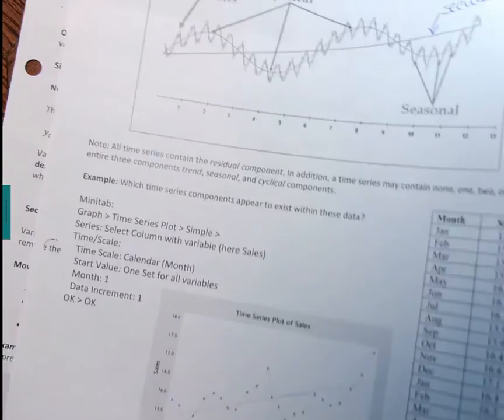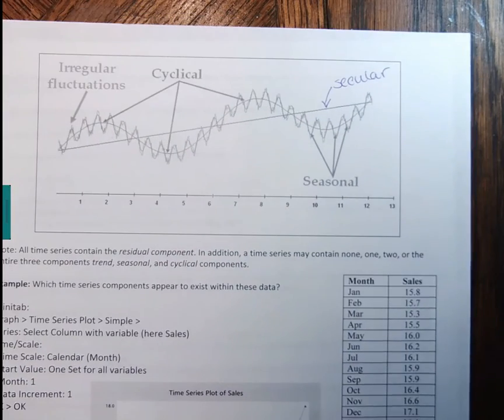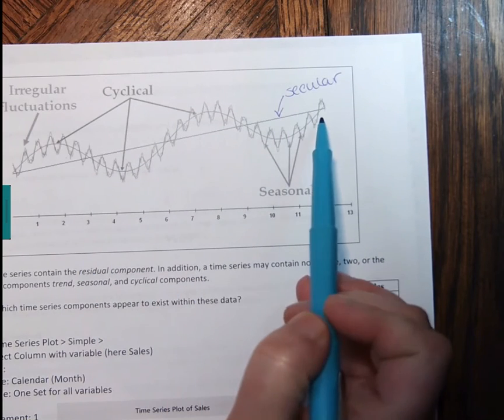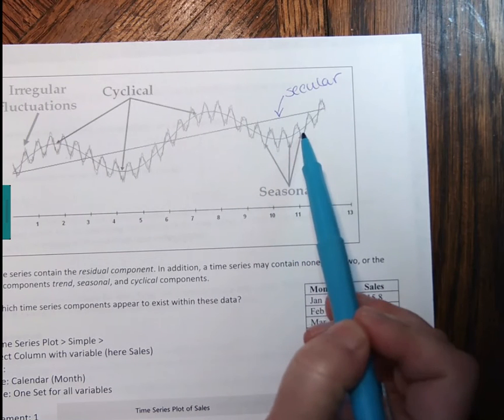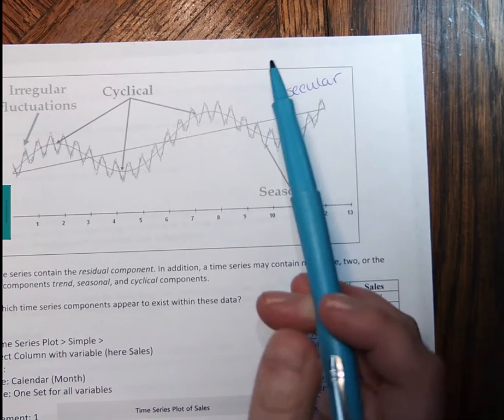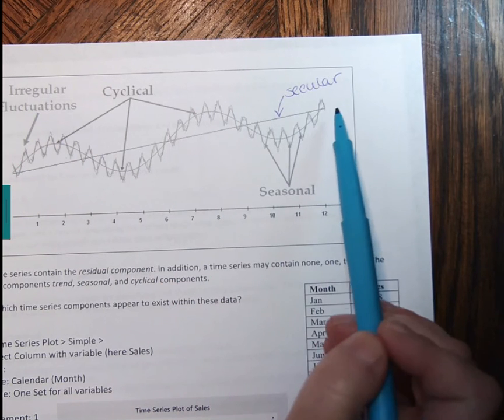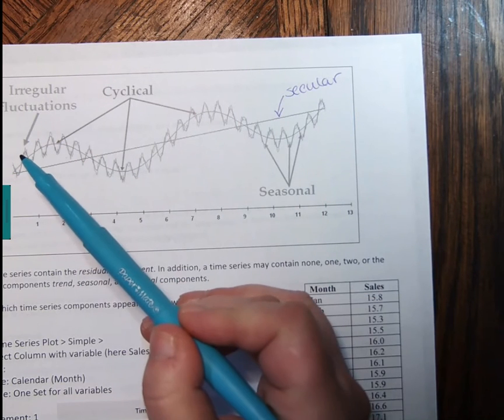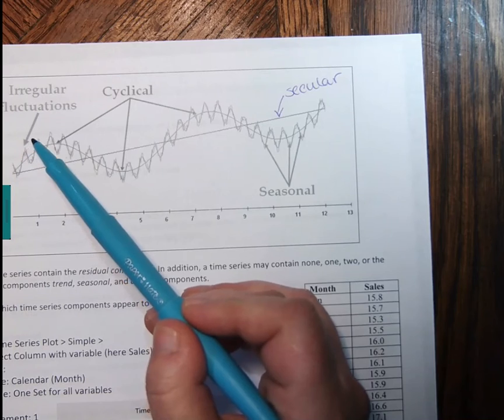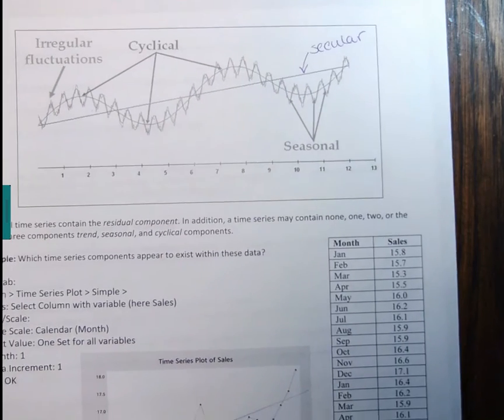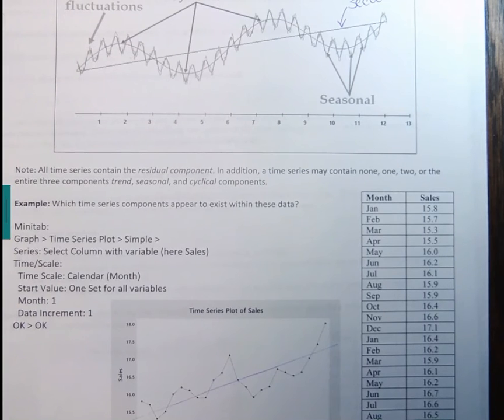Here's another plot of how we could view the difference between all of these. So for each of these components, again, we have the secular is the line. The seasonal are those within-year variations. The cyclical is this longer variation that occurs around the secular. And then all the little irregular fluctuations, those are the residual effects. So notice that all time series are going to contain the residual component. And then in addition, time series may contain none, one, two, or all three of the other components: trends, seasonal, and cyclical.